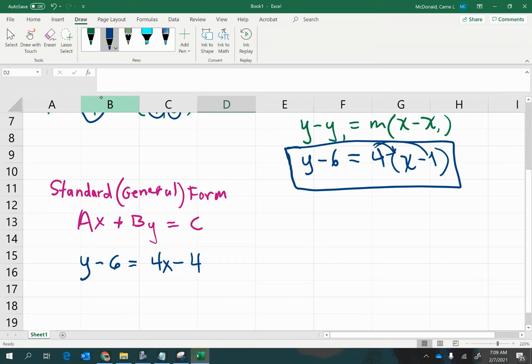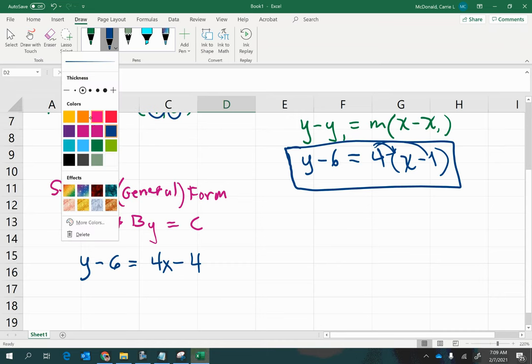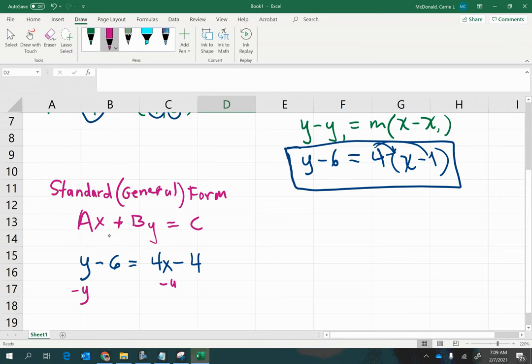To get this in standard form, I need my x term and my y term to be together. I also want the coefficient of x to be positive, so it's going to make more sense for me to move the y term over to the side where x is. So that way x doesn't have to change sides and therefore change signs.